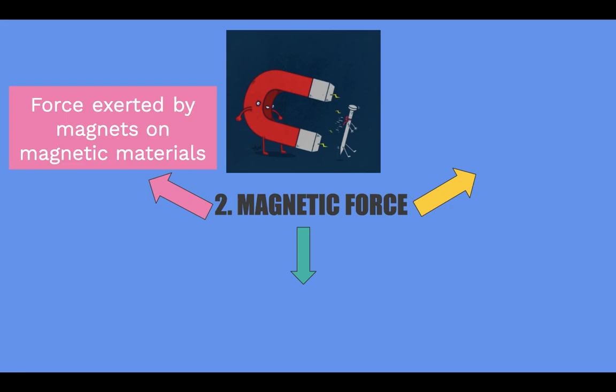Magnetic force is the force exerted by magnets on magnetic materials. Magnetic materials include nickel, iron, cobalt and steel. You can use the acronym NICS to memorize what the magnetic materials are. Note that C stands for cobalt and not copper, as copper is not a magnetic material.